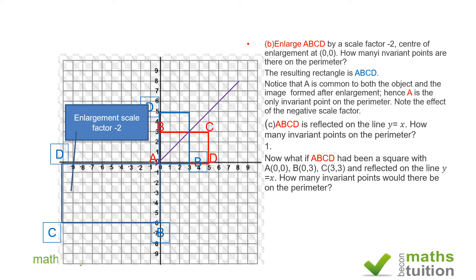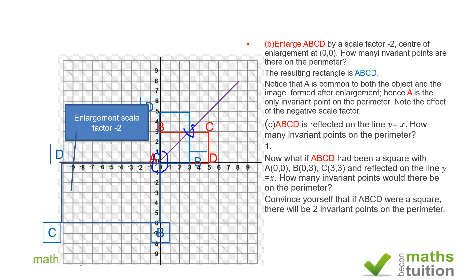If we have square ABCD with those coordinates and reflect it on the line y = x, certain points will not move. Convince yourself that there are two invariant points — this point here will not move, and that point will not move. So when you reflect a square ABCD on the line y = x, there will be two invariant points.